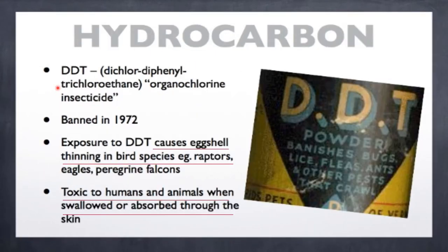Hydrocarbons such as DDT, which is dichlorodiphenyl trichloroethane, is an organochlorine insecticide that was banned in the year 1972. Exposure to DDT causes eggshell thinning in birds, for example raptors and eagles. It is also toxic to humans and animals when swallowed or absorbed through the skin.